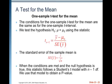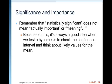Now let's talk about tests for the mean. The conditions for the one-sample t-test for the mean are exactly the same as for the one-sample t-interval. We test the hypothesis H₀: mu equals mu₀ using the statistic t(n−1) equals y-bar minus mu₀ over the standard error of y-bar, where standard error of y-bar equals s over square root of n. When the conditions are met and the null hypothesis is true, this statistic follows a Student's t model with n minus 1 degrees of freedom, and we use that model to obtain a p-value. Remember that statistically significant does not mean actually important or meaningful.